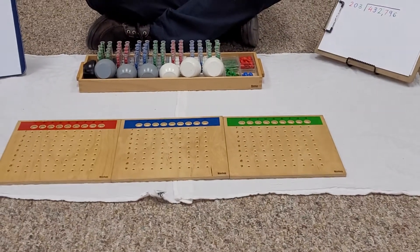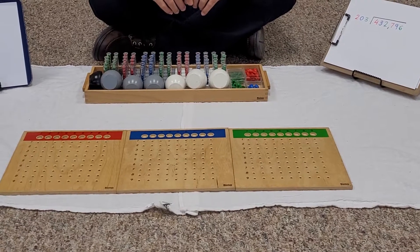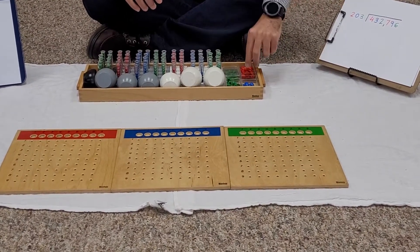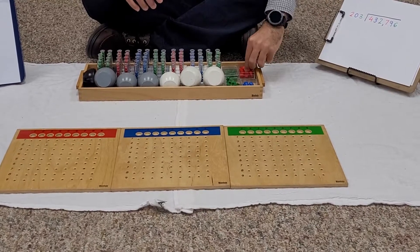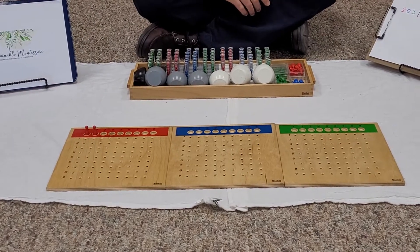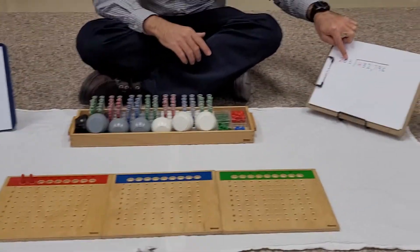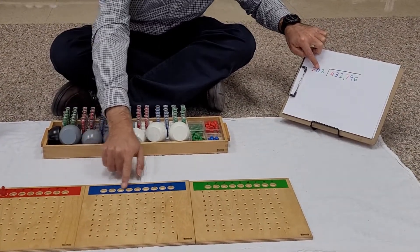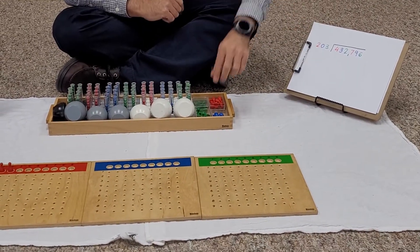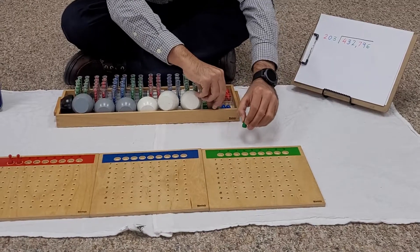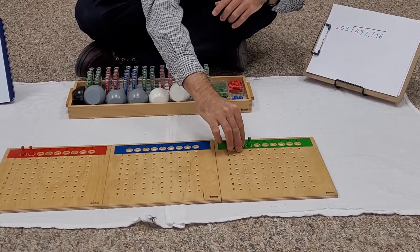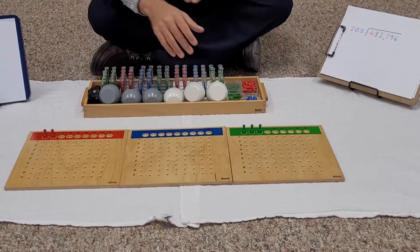As every time we work with test tubes, we're going to start putting the divisor. We have two hundreds - two skittles on the hundreds. Then we have zero, that's our special case. We will not put any skittles on the tens board, and we're going to put three skittles on the units.